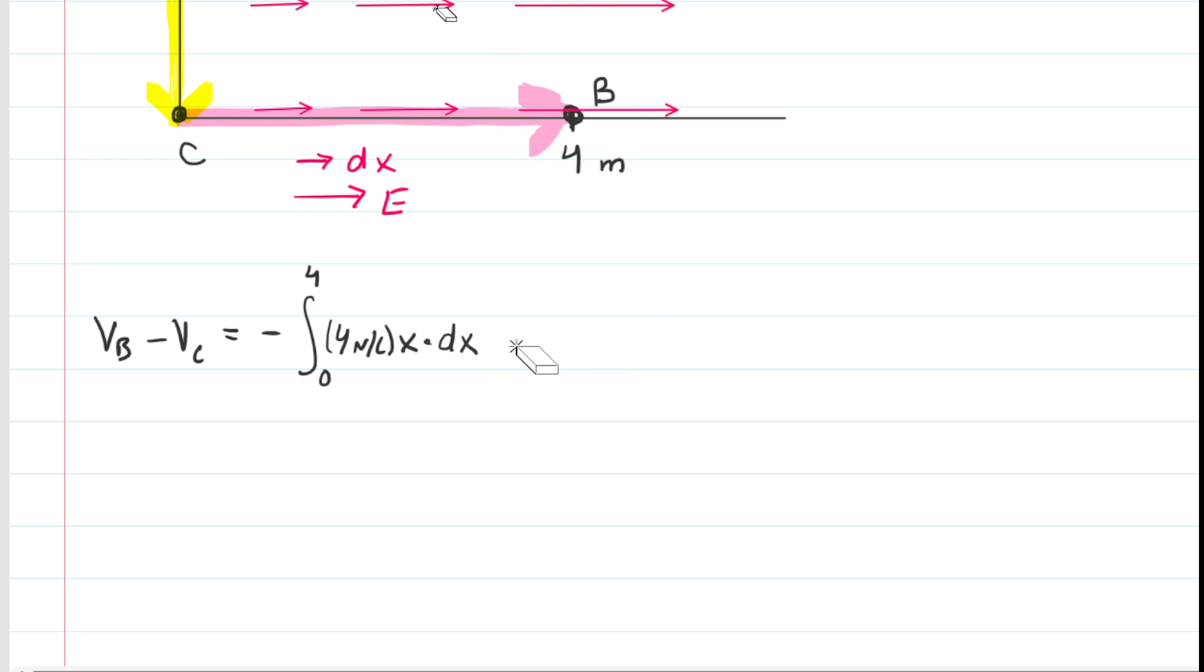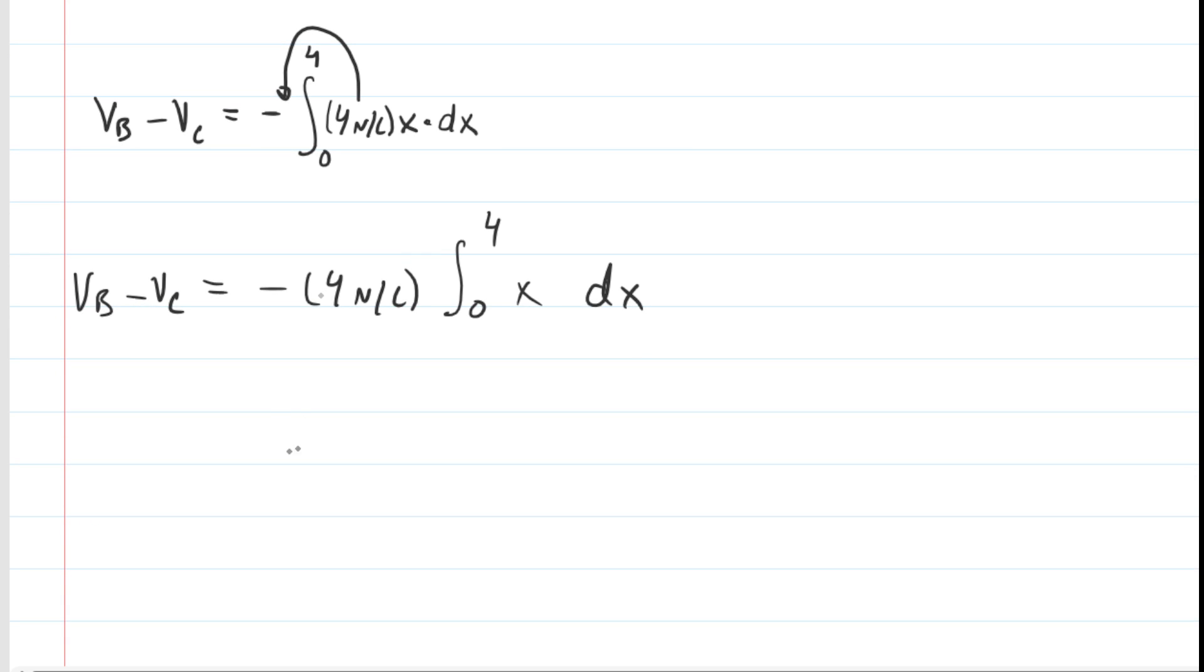And now this becomes a relatively easy integral. We have four newtons per coulomb as a constant, so we can factor that to the outside. And then we have this relatively mundane integral of x dx. We all know from calculus that we can add one to the exponent to make it into x squared and then divide by that new exponent, which is two. And look at that, we can actually reduce this. This becomes two newtons per coulomb, and then we are evaluating this integral on the bounds from zero to four.